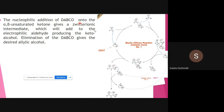Nitrogen possesses a lone pair, and this lone pair will add nucleophilically. So nucleophilic addition of DABCO to an alpha-beta unsaturated carbonyl compound gives this zwitterionic intermediate. Once this nucleophile attacks at the beta position — one, two, three, four — this is a 1,4-conjugate addition of this catalyst across the alpha-beta unsaturated carbonyl compound to generate this zwitterion.